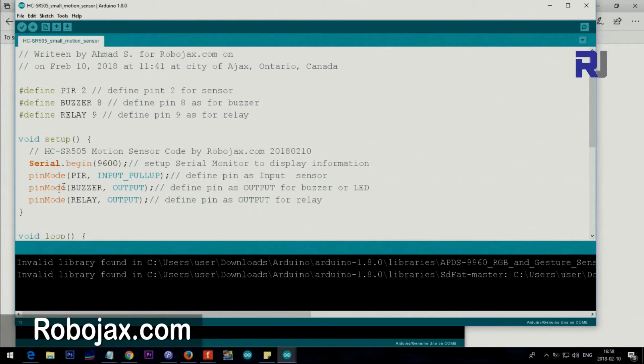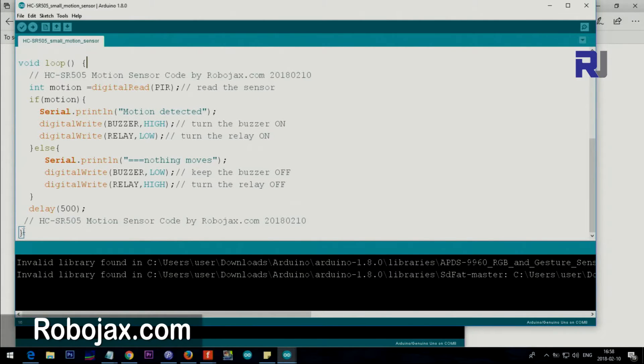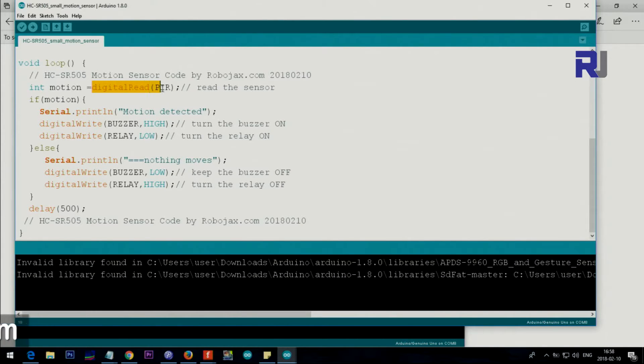Loop starts from here to here and all this action happens here. We say digitalRead PIR, that's from pin 2. We read the value of pin 2, store it in the motion variable. And then we say if motion is equal true, so it means if it has some value. You don't have to put equal equal 1, that's extra, this will work the same, so it will be true.